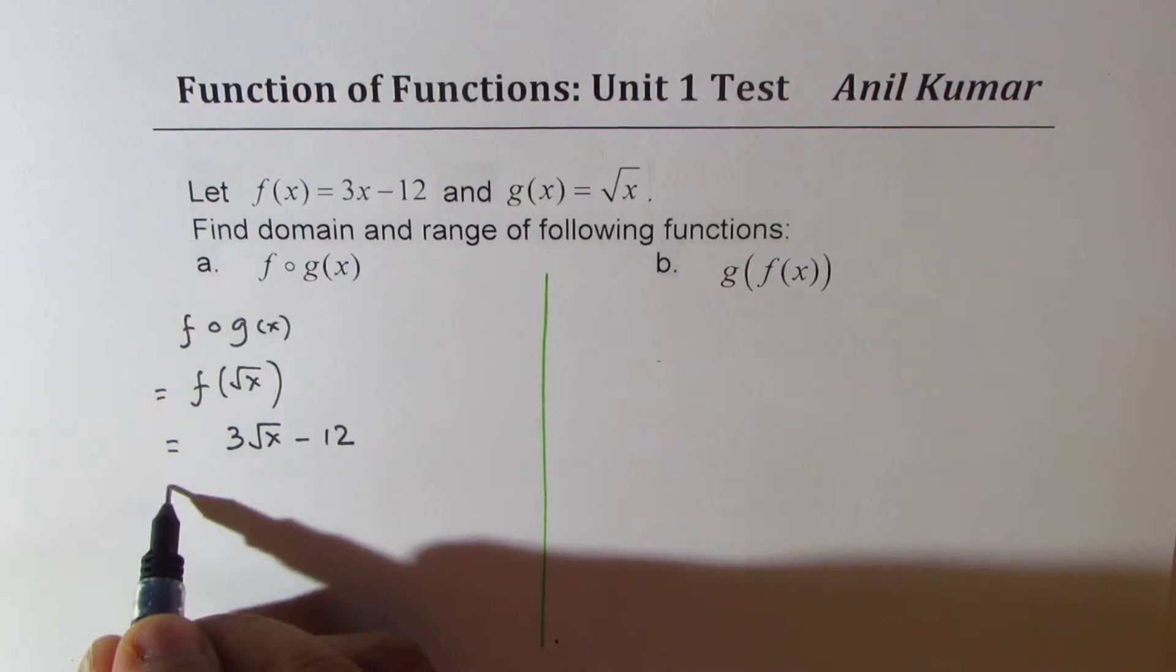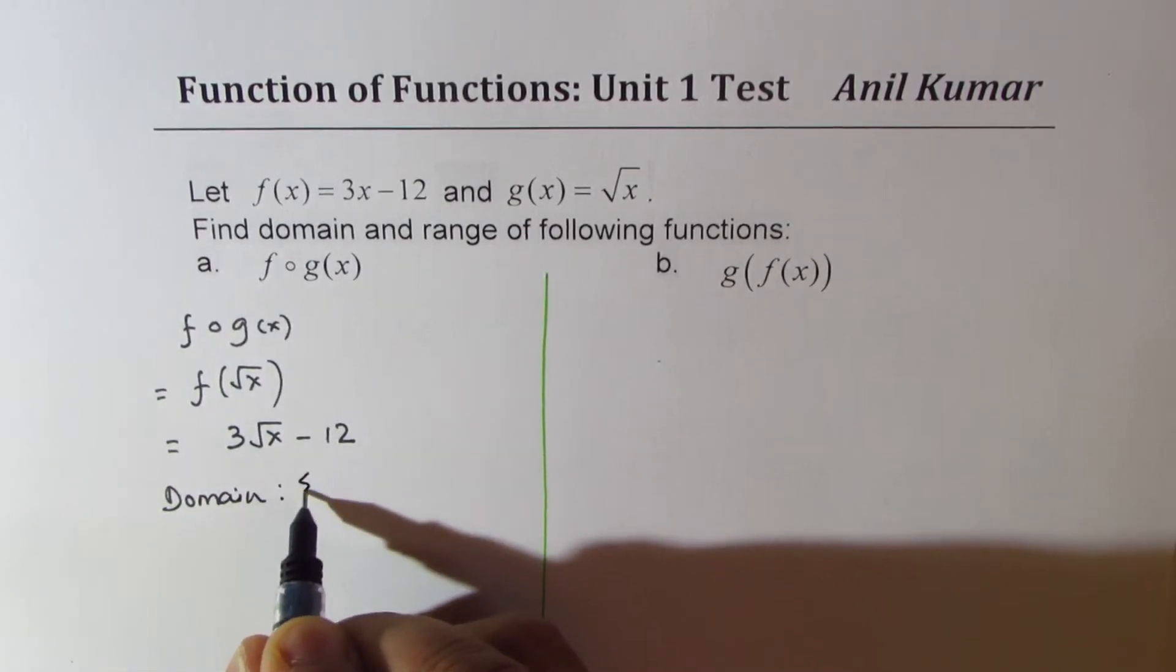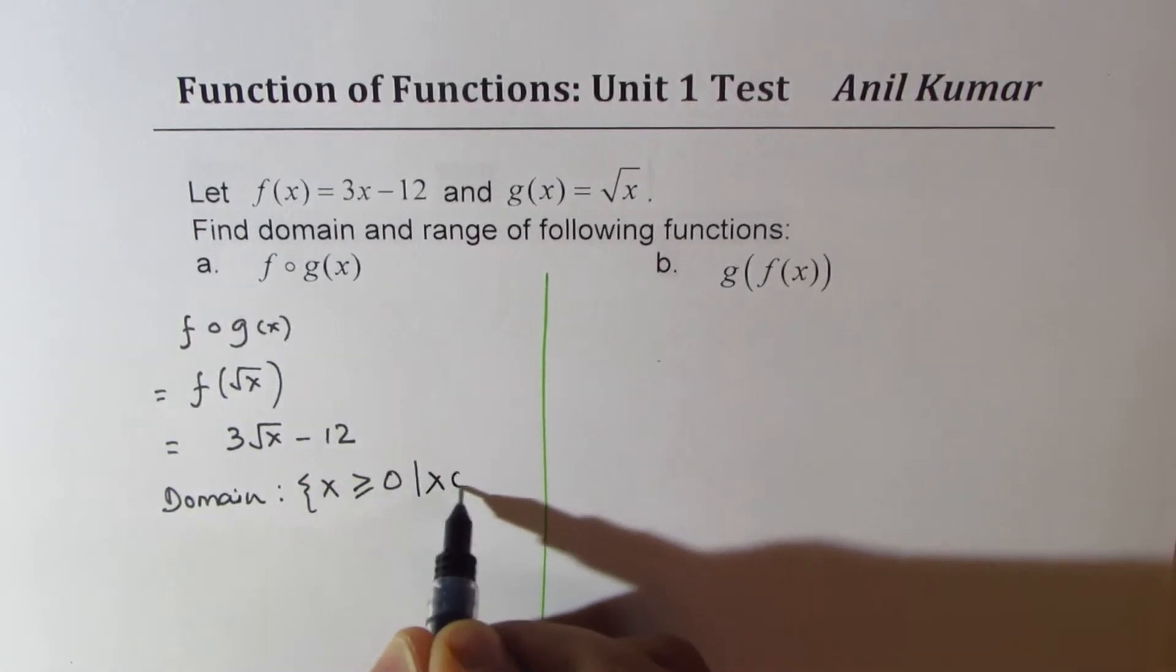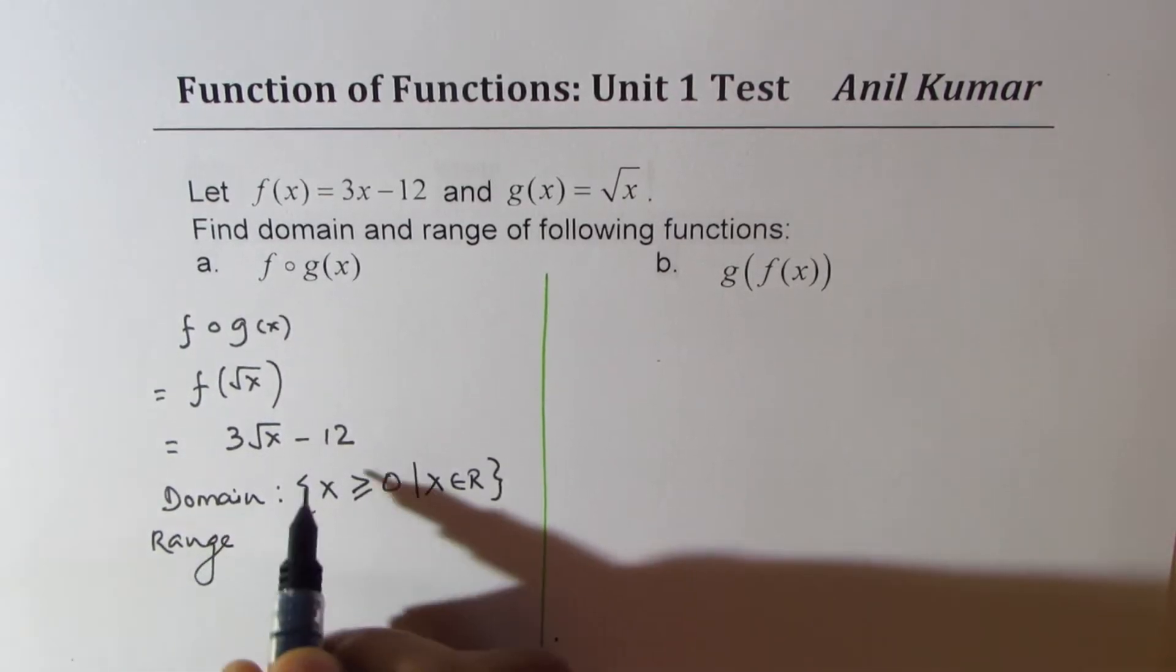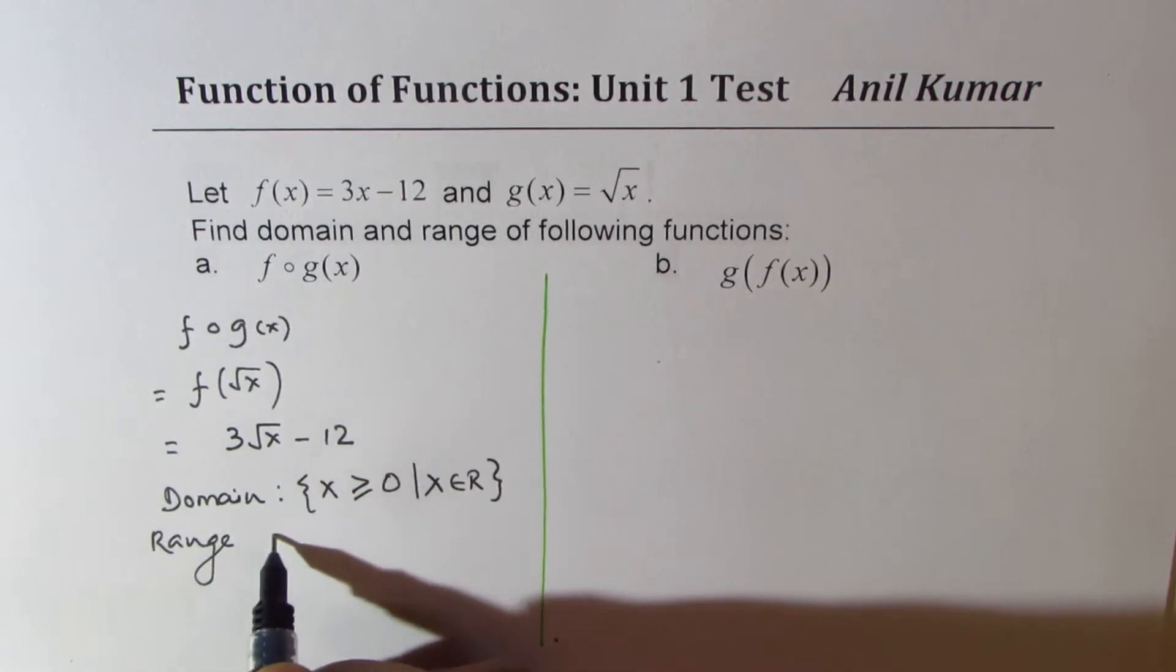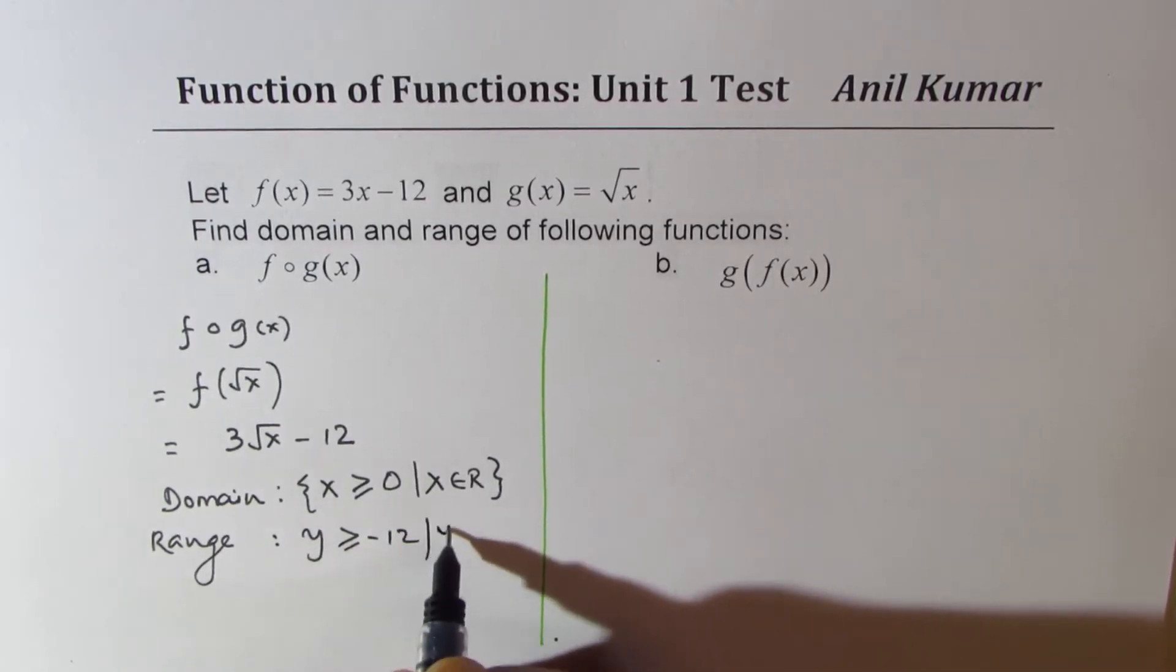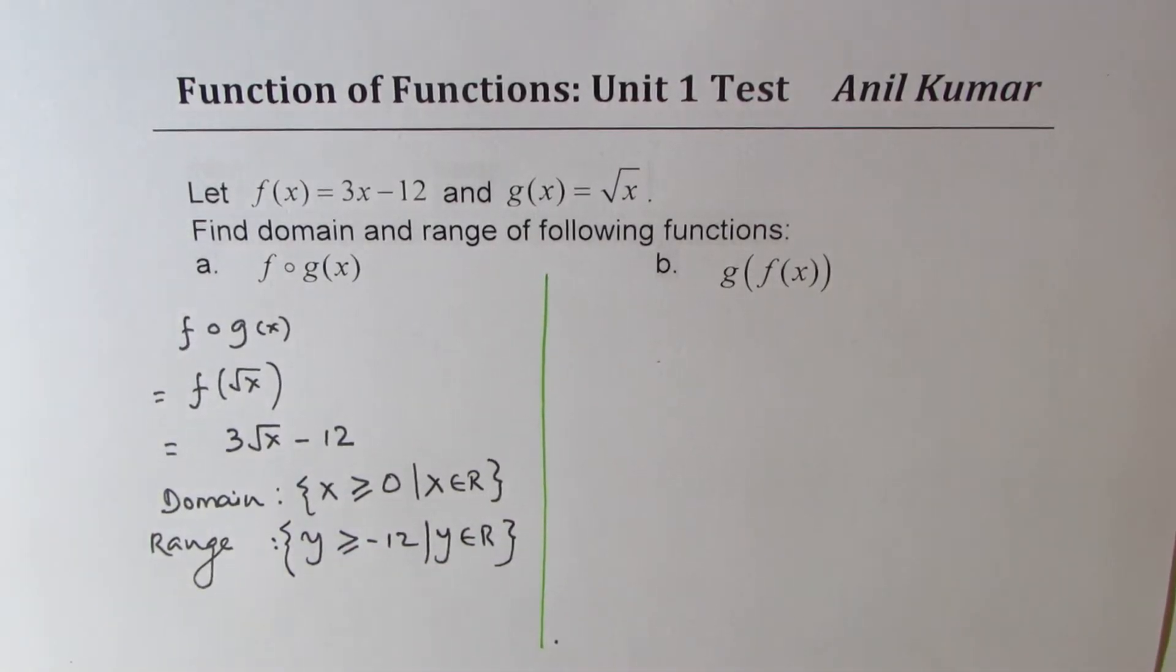Now, from here, you can write domain as the x values can be greater than or equal to 0, where x belongs to real numbers. As far as the range is concerned, this part is positive and therefore its lowest value is 0. So the range here is y is greater than or equal to minus 12, where y belongs to real numbers. So that is how you get domain and range of f of g of x.